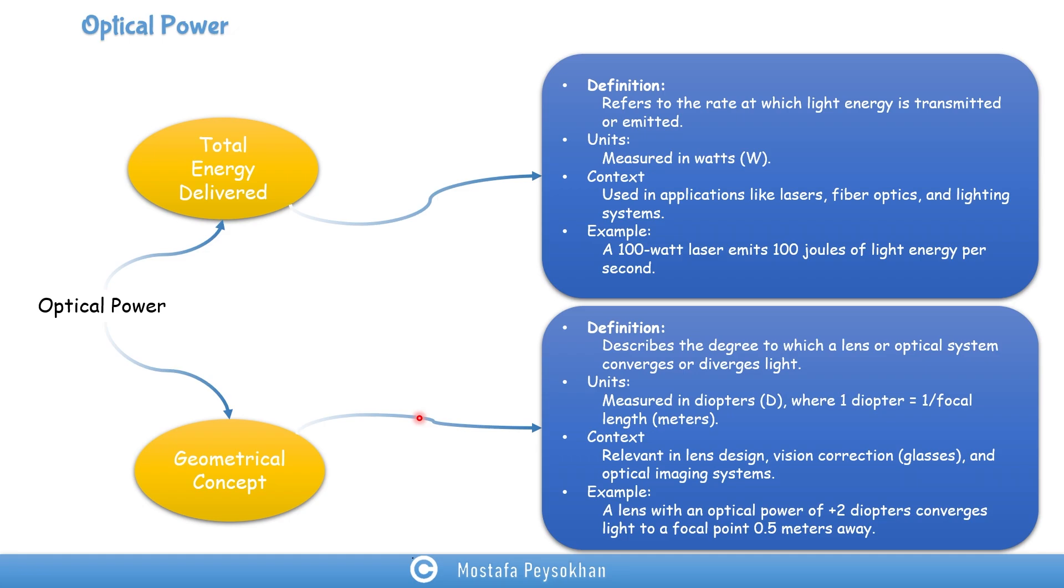So as an example, we can say when we have a lens with optical power of plus 2 diopters, it means that this lens can converge the light into a focal length of 0.5 meters away.